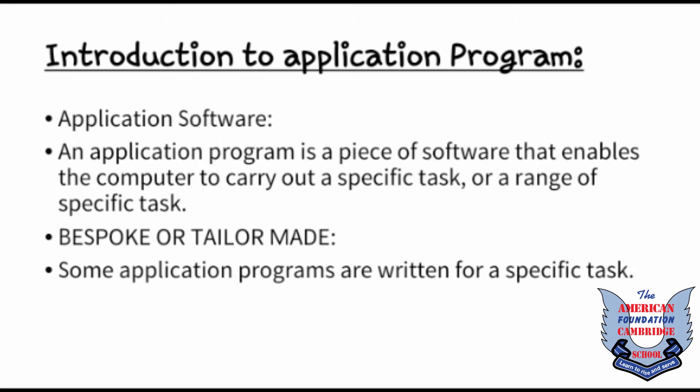So what is application software? An application program is a piece of software that enables the computer to carry out a specific task or a range of specific tasks. Application software is used to perform different tasks by the user — for example, Microsoft Word, Paint, WordPad, WhatsApp, and messengers. All these are application software because we use them for our work.